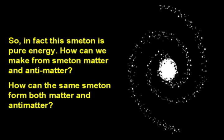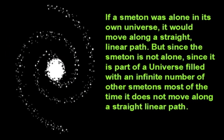How can we make from SMETON matter and antimatter? How can the same SMETON form both matter and antimatter? If a SMETON was alone in its own universe, it would move along a straight, linear path. But since the SMETON is not alone — since it is part of a universe filled with an infinite number of other SMETONs — most of the time it does not move along a straight, linear path.